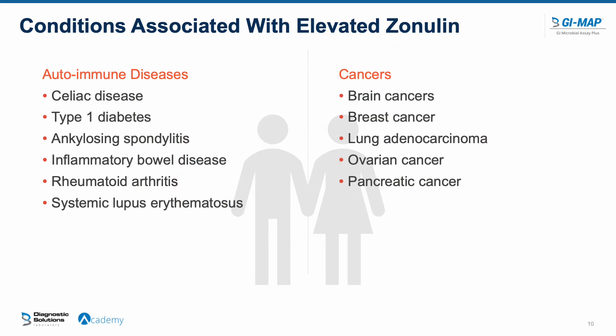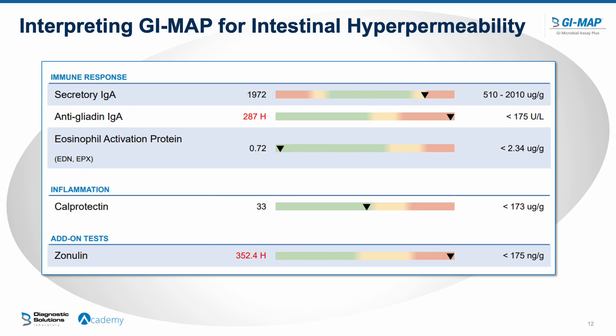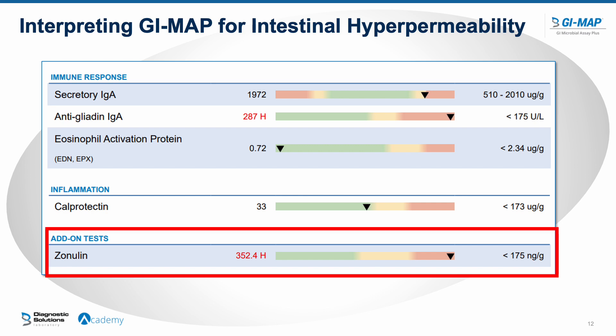There is a large list of conditions officially associated with elevated zonulin. In research, these are well-documented links with chronic elevated zonulin and chronic intestinal hyperpermeability — including a huge range of autoimmune conditions, many cancers, nervous system conditions, and non-alcoholic fatty liver disease. Clinically, we also see subclinical presentations like brain fog, fatigue, low energy, joint pain, food sensitivities, and difficulty losing or gaining weight.